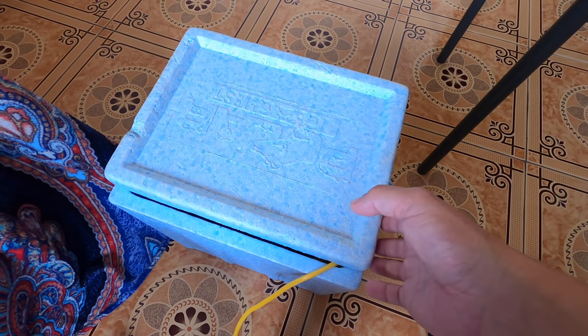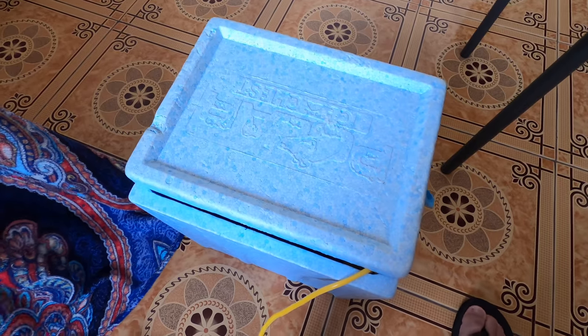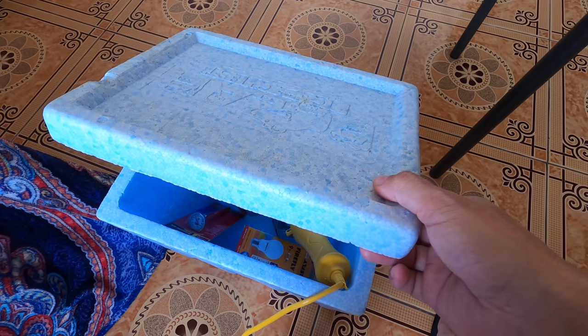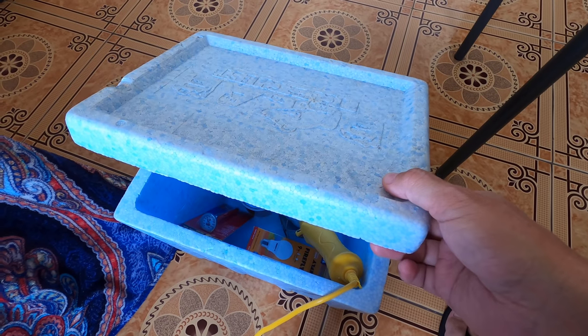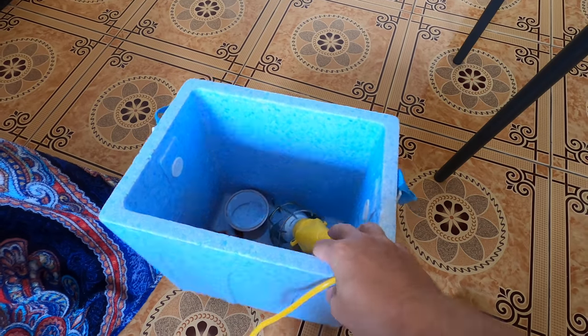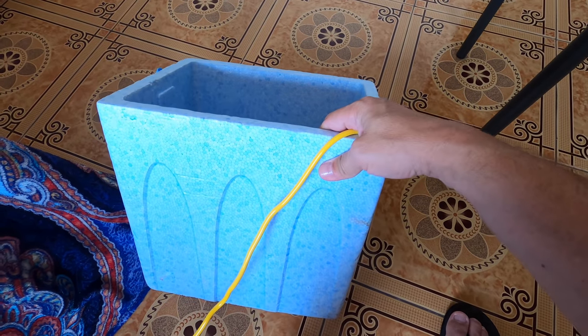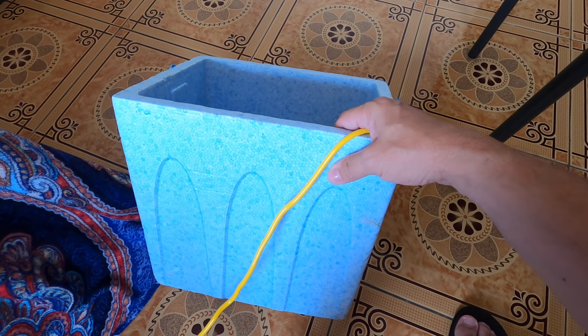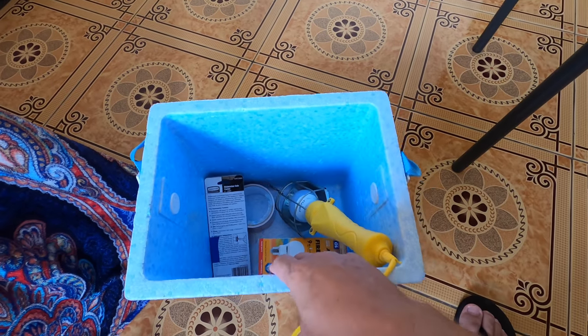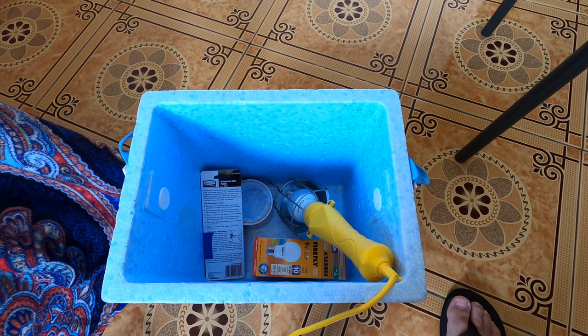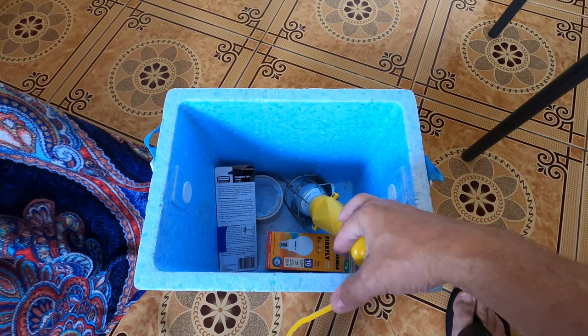Alright folks, I'm going to do a little project. I'm going to try to make a little homemade duck egg incubator. I guess you can hatch any eggs in here, but basically you've got to maintain about 99.5 degrees Fahrenheit. Chicken egg is 21 days, duck egg hatches in about 28 days.